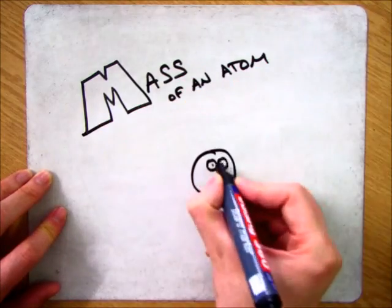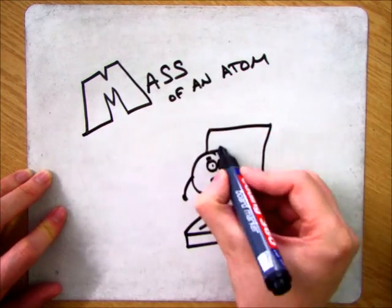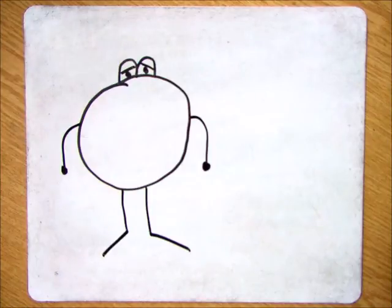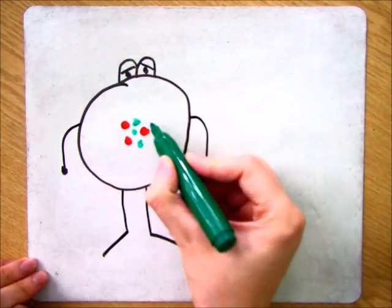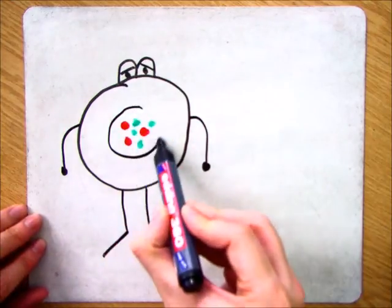This video is going to focus on the mass of an atom and where the mass of the atom comes from. So if we focus on the atom lithium, what I'm drawing here is the actual makeup of the subatomic particles in the middle and then the electrons around the outside.